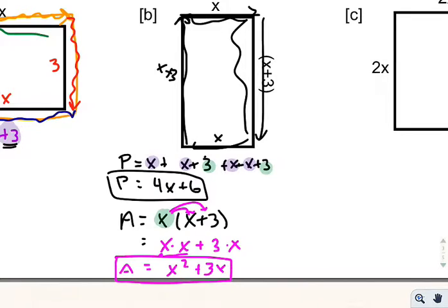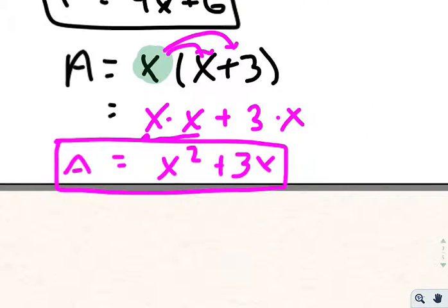Now, these are not like terms. And that's a common mistake people make too. They say, well look, they're both an x. But that's not an x. This guy right here is an x squared. Not the same thing. Not a like term for the 3x. We're going to leave it just like it is.